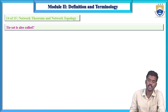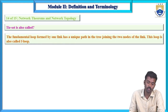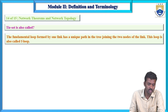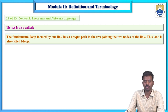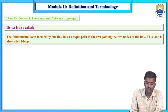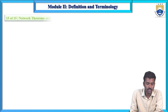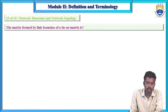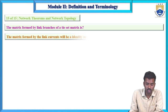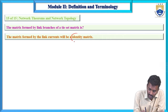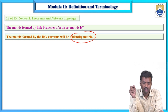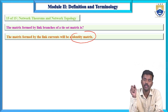Fourteenth question: what is a tie set? The fundamental loop formed by one link has a unique path in the tree joining the two nodes of the link. This loop is known as the fundamental loop or tie set. The matrix formed by the link branches of the tie set matrix using link currents is known as the identity matrix.